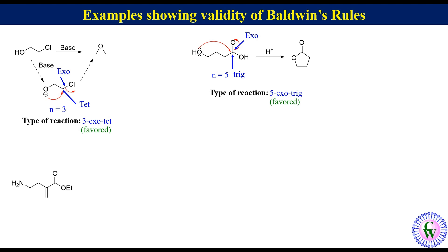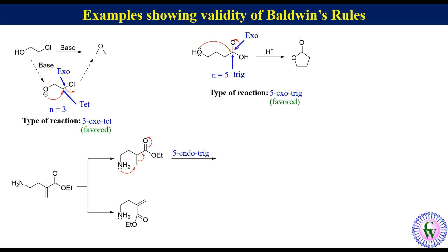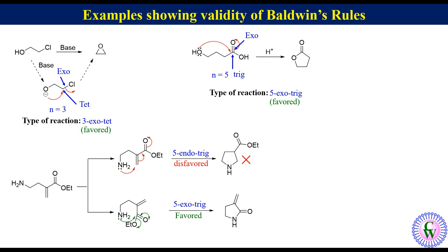Let's take an alpha-beta unsaturated amino ester. There are two possibilities for cyclization: it can undergo 5-endotrig reaction to produce ethyl pyrrolidine-3-carboxylate, or 5-exotrig to produce 3-methylene pyrrolidin-2-one. According to Baldwin's Rule, 5-endotrig is disfavored while 5-exotrig is favored. Therefore, ethyl pyrrolidine-3-carboxylate is not formed, giving rise to 3-methylene pyrrolidin-2-one as the only product.